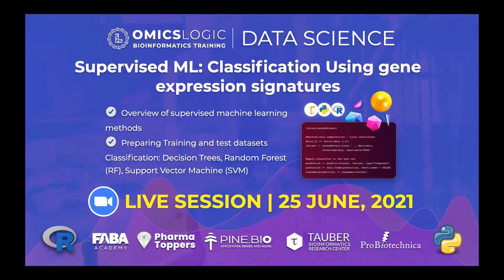In the next session, which will be the sixth session, after learning about the unsupervised machine learning methods, we will be learning about training and test data sets, and how we can apply classification algorithms such as decision tree, random forest, and support vector machine.